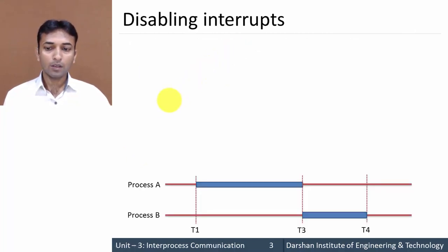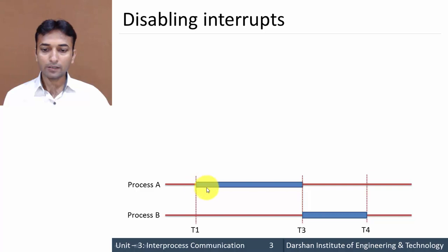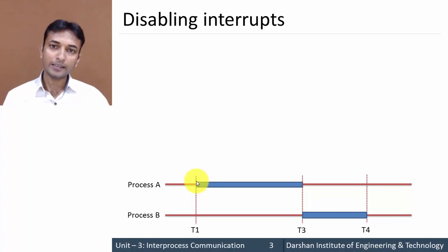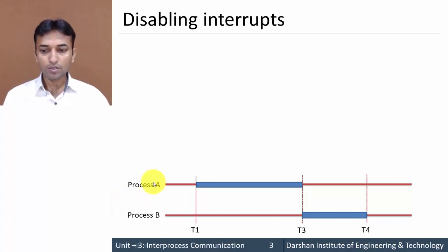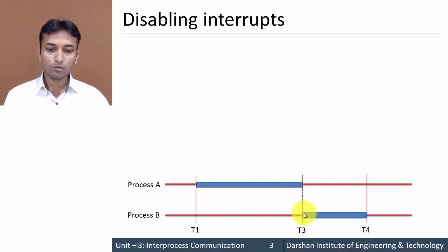Let us see disabling interrupt. We will consider the previous example of two processes A and B. Process A is in the critical region during a certain portion. Critical section means a part of a program or process in which it accesses the shared resource. Process A is using the shared resource from time t1 to time t3, and process B is using the shared resource from time t3 to time t4.